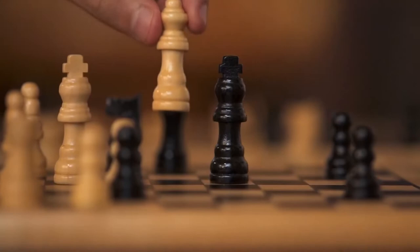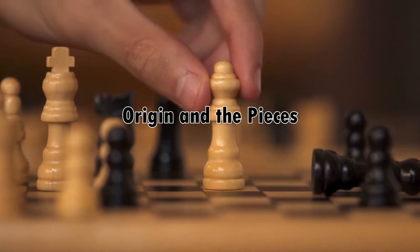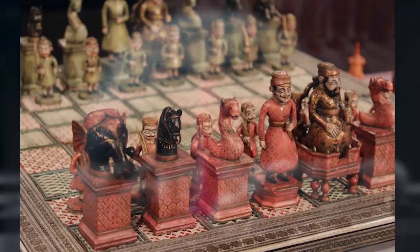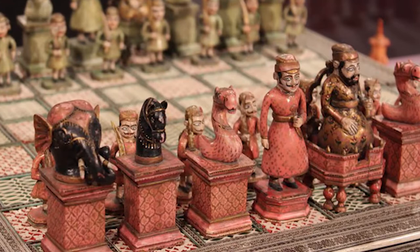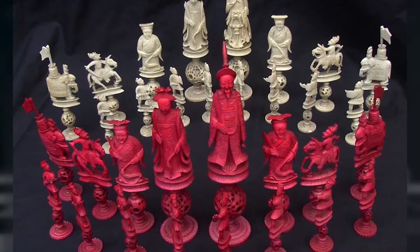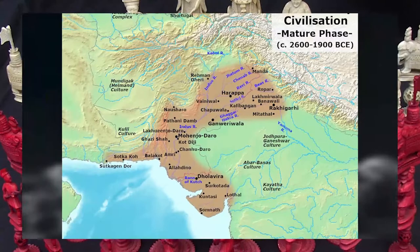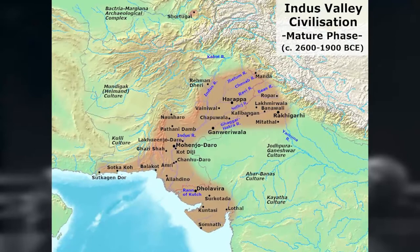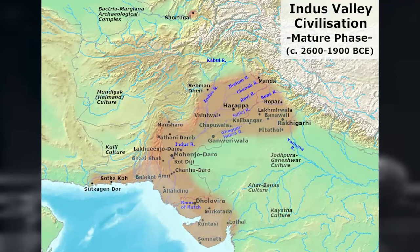Chess originated in India. For those who think it was China, the Chinese chessboard had its origin in India. Its very early origins may have been in the Indus Valley — archaeological remains have been found from 2000 to 3000 BC in the city of Lothal, of pieces on a board that resembled chess.